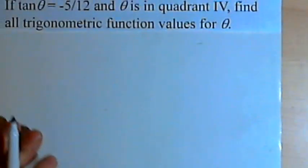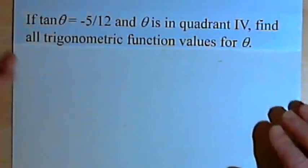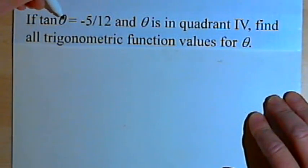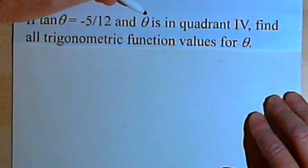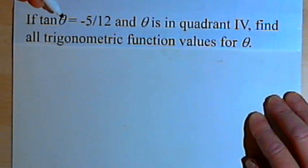So a typical problem might look something like this. If the tangent of theta is negative 5 over 12 and theta is in quadrant 4, find all trigonometric function values for theta.